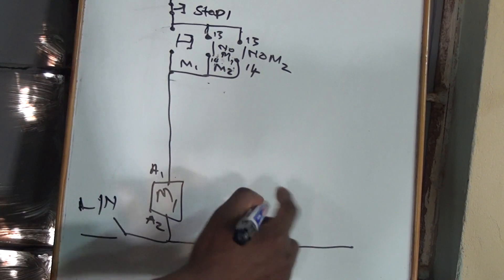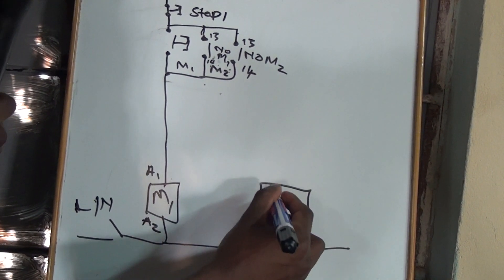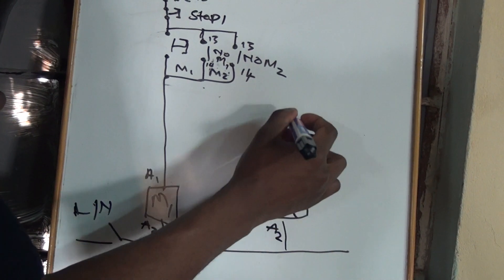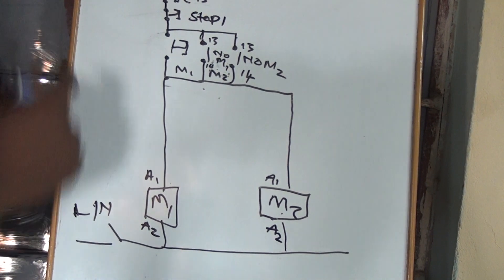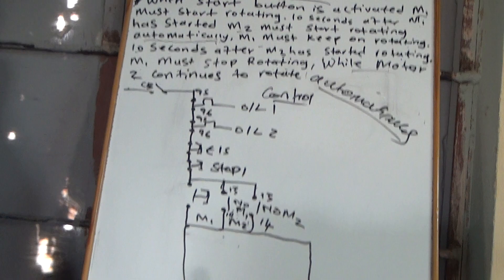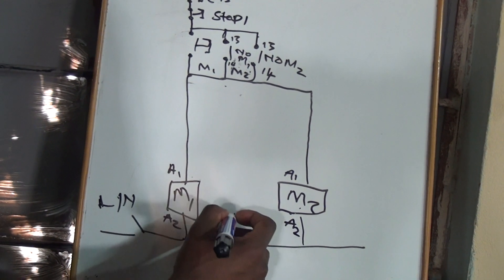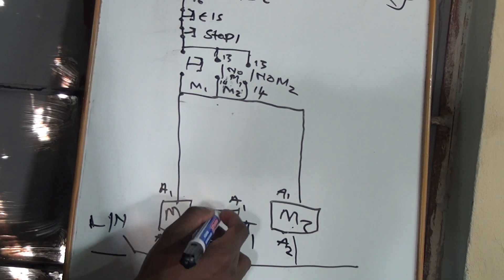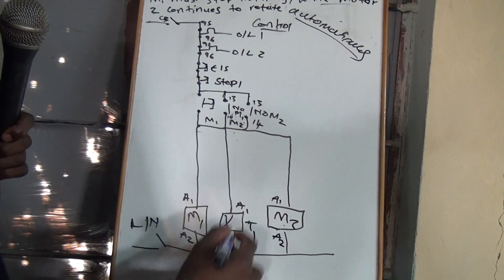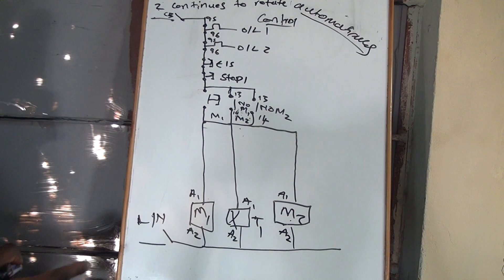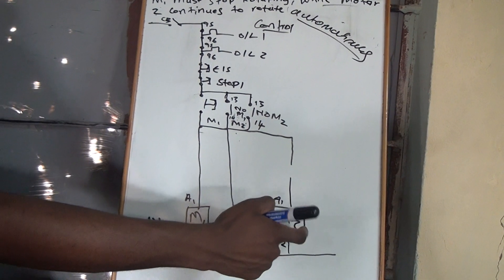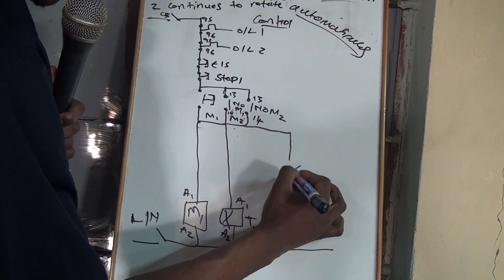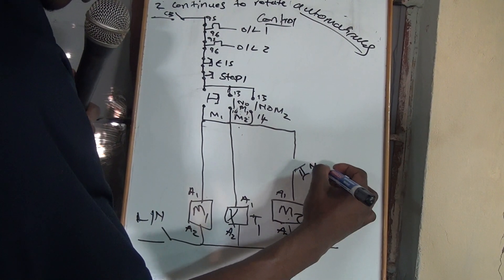So we are going to have two coils — one for Motor 1 and one for Motor 2, with terminals A1 and A2 and connect them accordingly. Remember, the statement says that Motor 2 must run automatically 10 seconds after Motor 1 started. So I'm going to introduce a timer, and our timer will be a delay-on timer. We are going to put a normally open contact here so that the coil for Motor 2 energizes 10 seconds after Motor 1 started running. So it's a normally open contact of Timer 1.